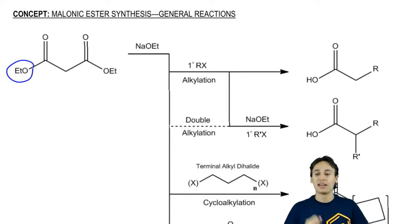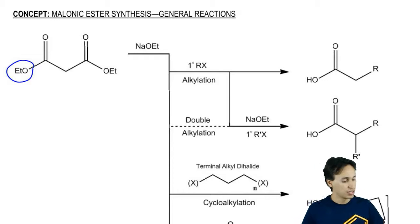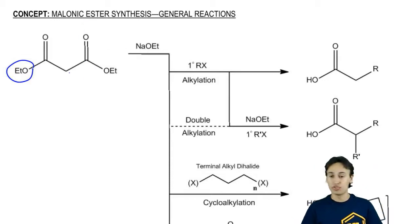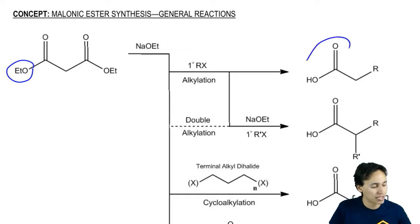What that means is that after I hydrolyze, not just this one turns into carboxylic acid. They both do. That means that the only difference between acetoacidic ester and melonic ester synthesis is that my products have carboxylic acids at the end.